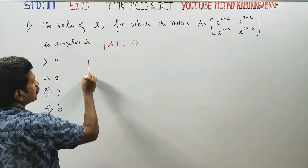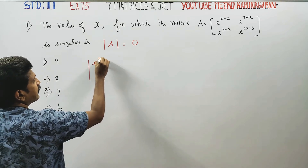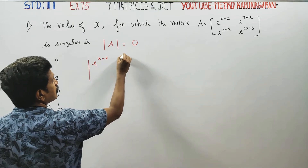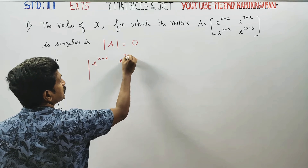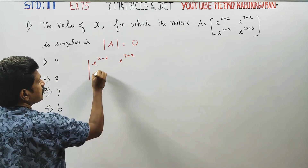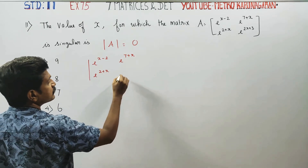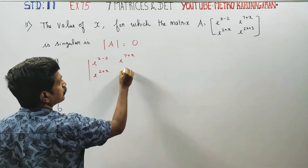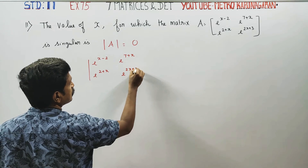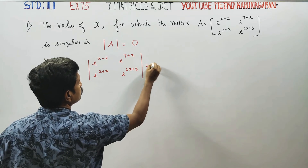Then, this is the determinant value: e power (x minus 2), e power (7 plus x), e power (2 plus x), e power (2x plus 3). It is a determinant value of 0.